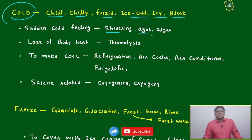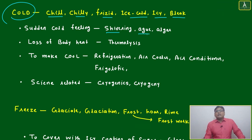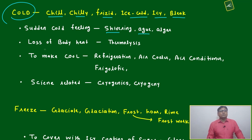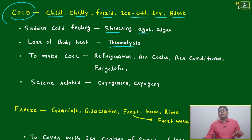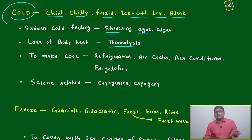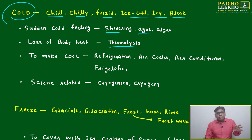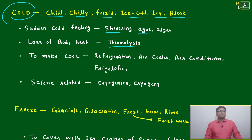Sudden cold feeling — after that, rigor, which is almost the same meaning. Then loss of body heat — that term is thermolysis. The body must be at a certain temperature, 37 degrees, which is the ideal temperature. If it goes much below that, it is called thermolysis.